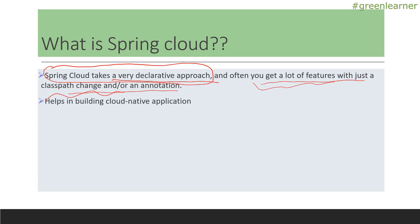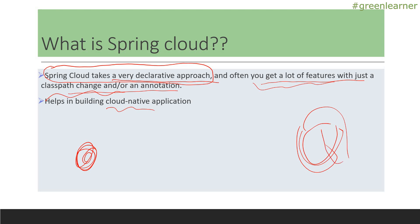Spring Cloud helps in building cloud native applications. The world is moving towards cloud. Earlier, on-premise applications were there with physical storage you had to take care of yourself. With cloud, you just push your application code and data and they take care of the infrastructure. When you have a distributed system on the cloud, services should be able to integrate, communicate, call each other, and be fault tolerant and resilient.